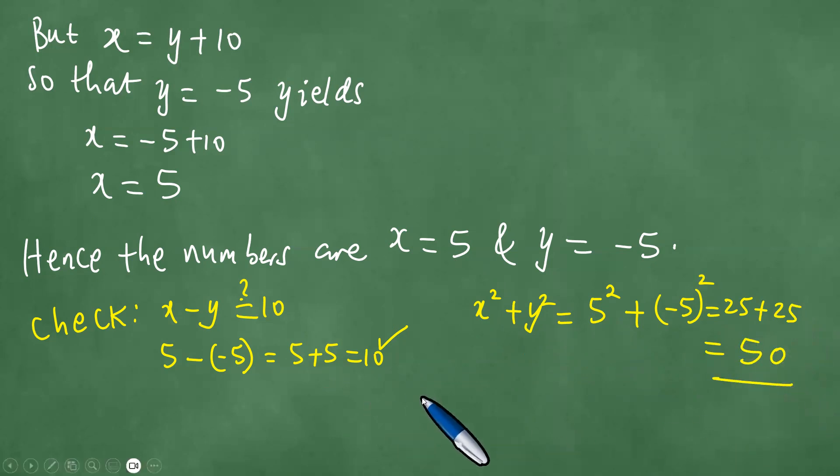With this said, we got the two numbers. They are exactly 5 and minus 5. Thanks everybody, goodbye to you.